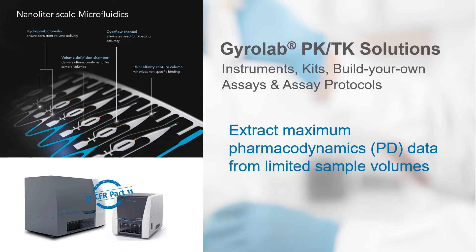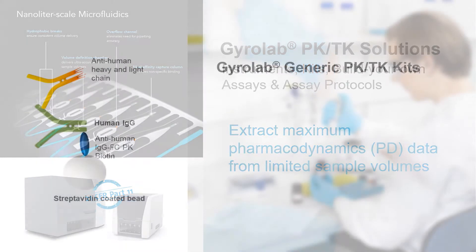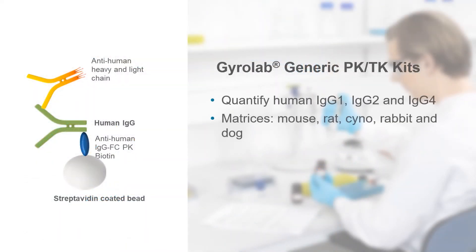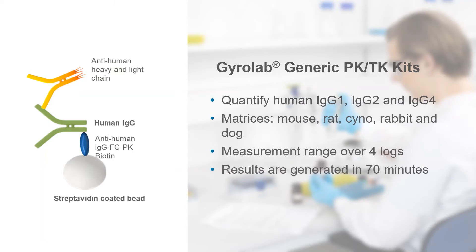The Gyrolab software is designed for 21 CFR Part 11 compliance and is compatible with regulated environments. Gyrolab generic PK kits are optimized for Gyrolab platforms and are utilized for pharmacokinetic and toxicokinetic immunoassays in early stage throughout preclinical development of intact recombinant human antibodies.